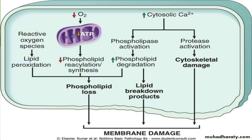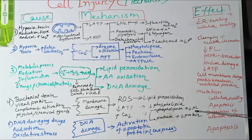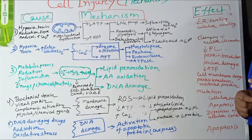Reactive oxygen species cause peroxidation of lipids present in the cell membrane. ATP depletion due to hypoxia causes disruption of phospholipid synthetic pathways. Increased cytosolic calcium causes activation of phospholipase, leading to breakdown of phospholipids and accumulation of lipid breakdown products. Increased calcium also activates protease enzymes, causing protein breakdown. These deleterious effects of membrane damage are widespread because all membranes — plasma membrane, lysosomal membrane, and mitochondrial membrane — are damaged.